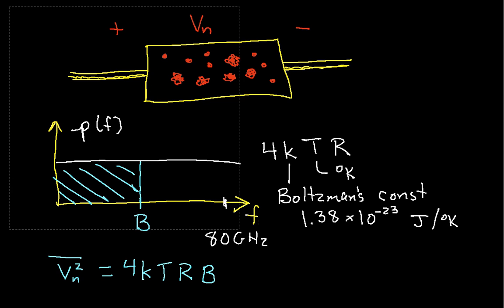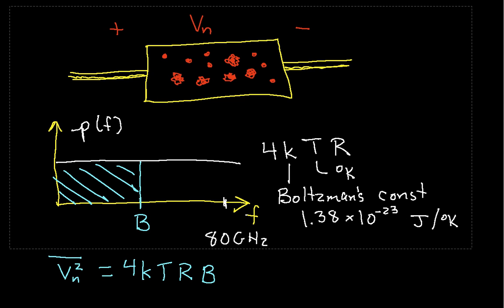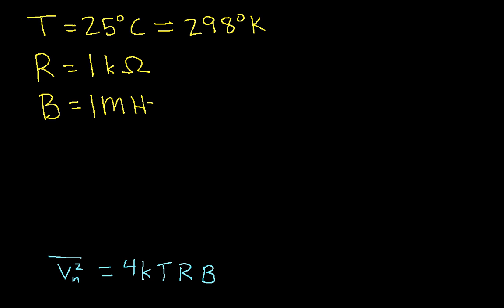To do an example, let's suppose that we have the following values. Let's suppose that T, our temperature, is 25 degrees Celsius, which is nominally room temperature. Here, in degrees Kelvin, this is fairly close to 298 degrees. Kelvin is 273 degrees higher than Celsius, approximately. Let's suppose that I have a 1K ohm resistor. And let's suppose my system has a bandwidth of 1 megahertz. This is a bandwidth that you might get, for example, if you're using a typical op-amp. A lot of op-amps have effective bandwidths of about 1 megahertz.